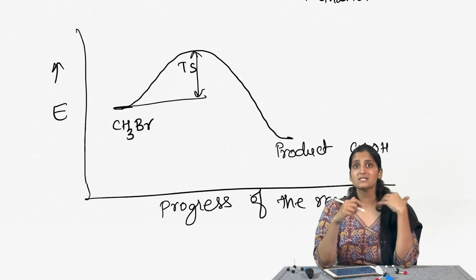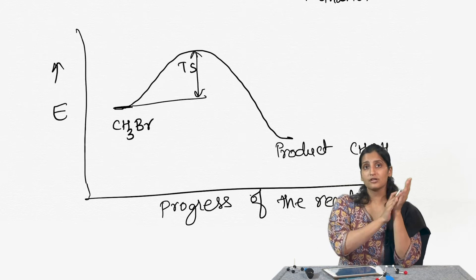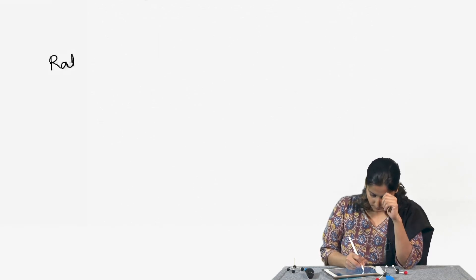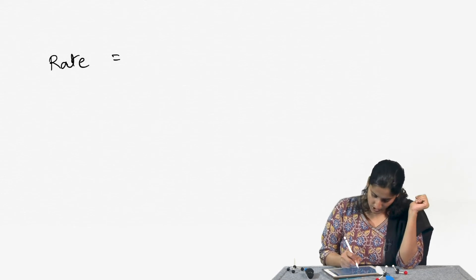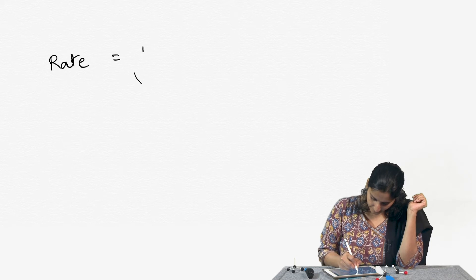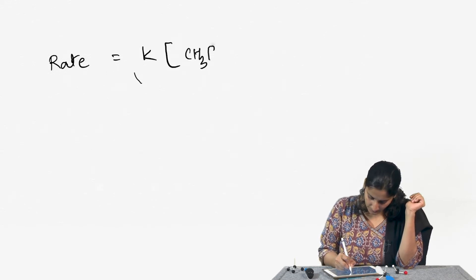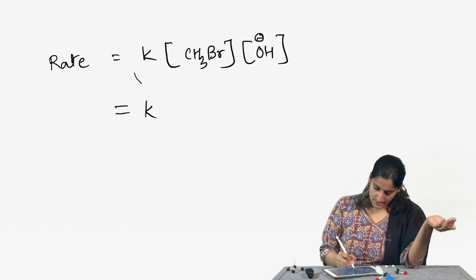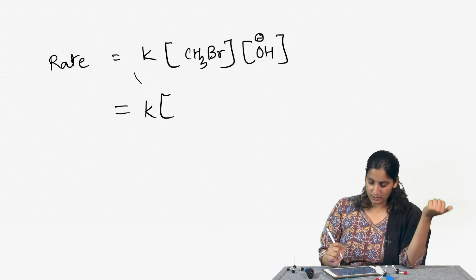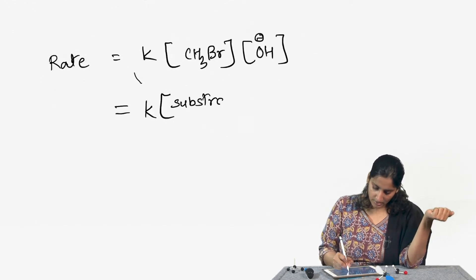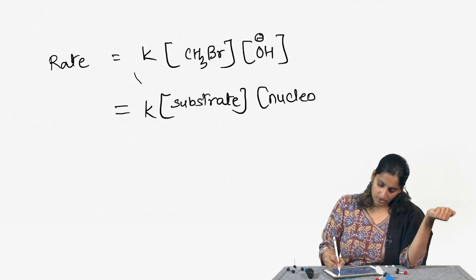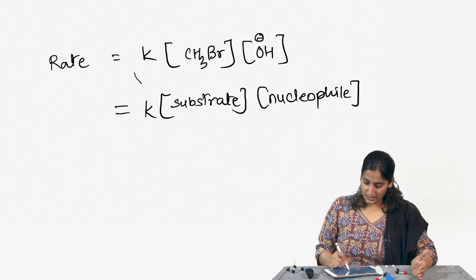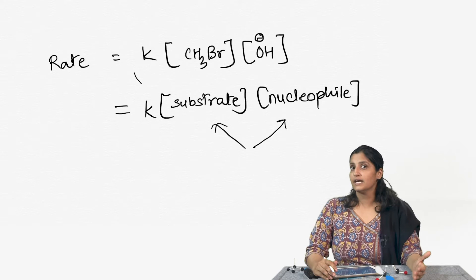It is not a unimolecular reaction — you need both hydroxide and methyl bromide for the slowest step to happen. The rate of the reaction can be written as the concentration of methyl bromide times the concentration of hydroxide. Generalizing, the rate equals a rate constant k times the concentration of substrate times the concentration of nucleophile. It is bimolecular SN2 because two species play a role in the rate equation.